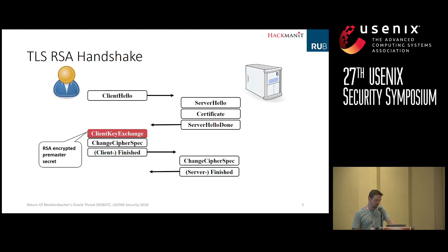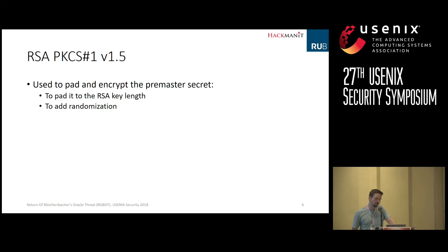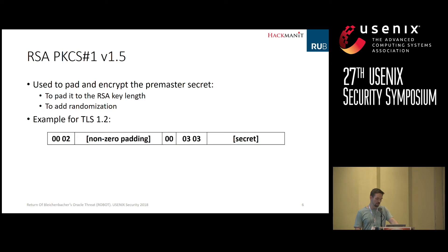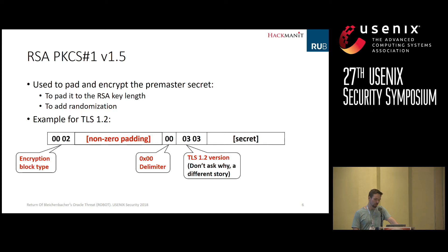The client key exchange message is of crucial importance. It contains an RSA-encrypted pre-master secret, encrypted using RSA PKCS1 version 1.5. This padding scheme is used to pad the secret to the specific RSA key length and to add some randomization. In TLS 1.2, the first two bytes of the encrypted pre-master secret contain 0x00 0x02 — this signals the encryption block type. Then there is a non-zero padding byte sequence terminated with a 0x00 delimiter, followed by the TLS 1.2 version bytes 0x03 0x03, and then the pre-master secret itself.